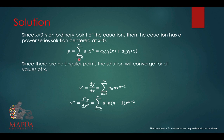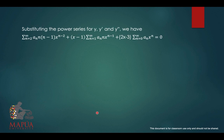For the second derivative of y, differentiate again: bring down n minus 1 and reduce the power by 1. Note that when n equals 0 and n equals 1, the first two terms are 0, so for the second derivative the power series should start at n equals 2. Substituting the power series for y, y prime, and y double prime into the original equation gives the following expression.